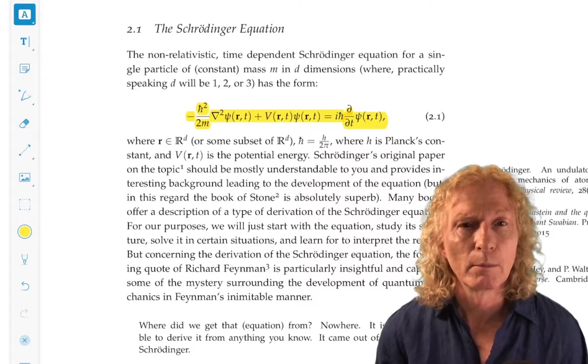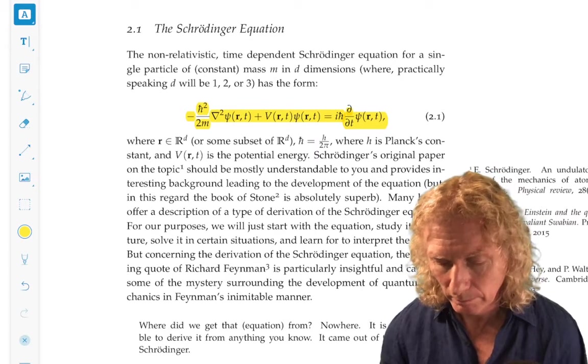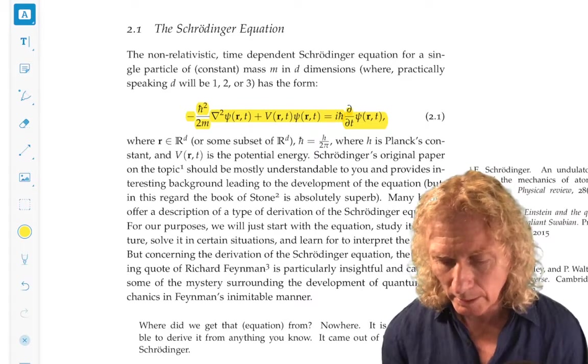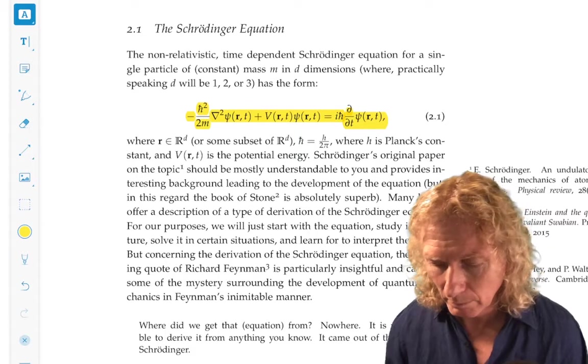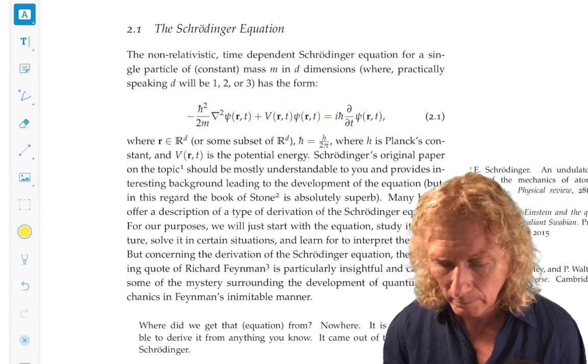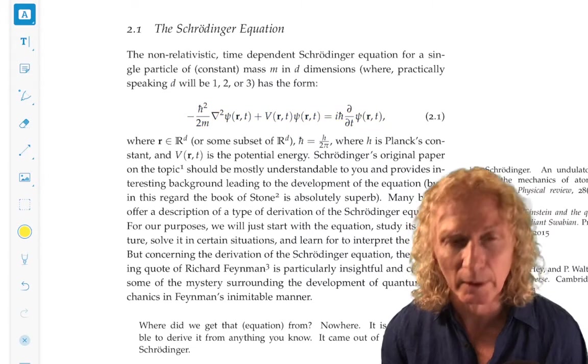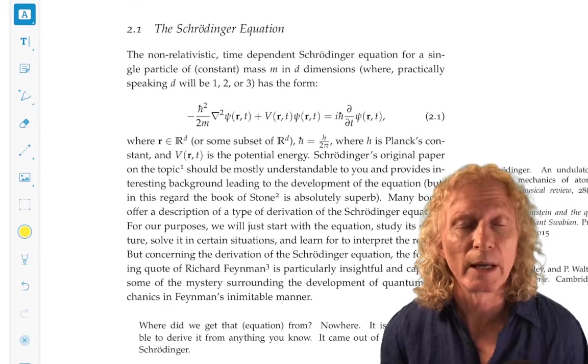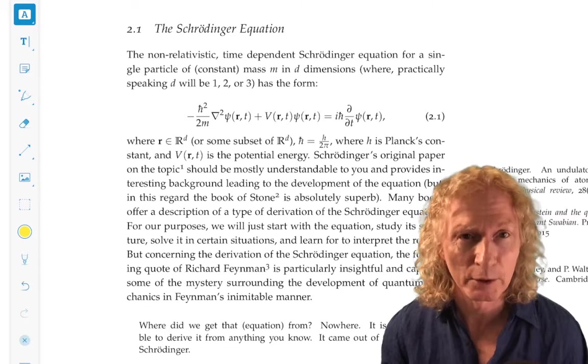It's a linear partial differential equation in D space dimensions plus time. It's got some constants in it. H-bar is H over 2π, H is Planck's constant.